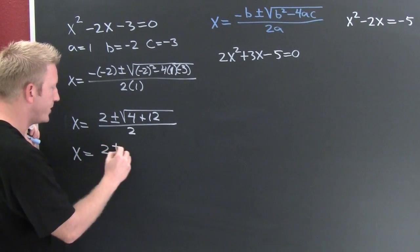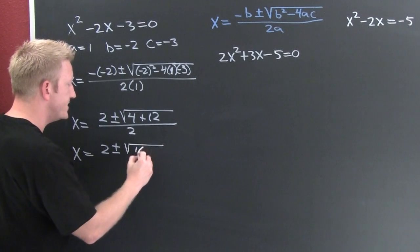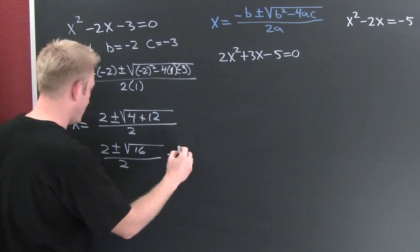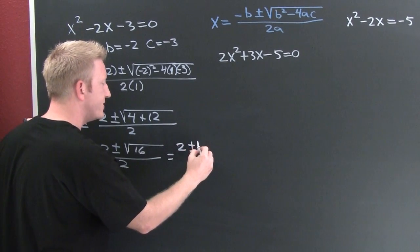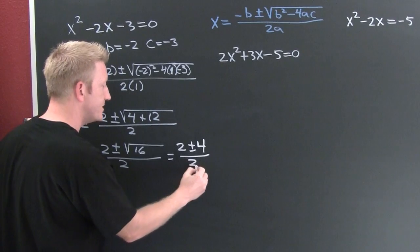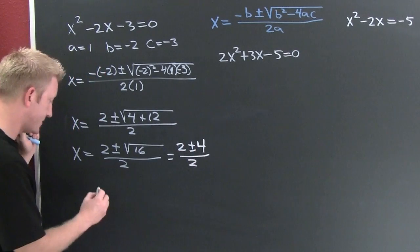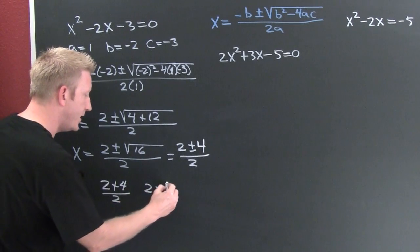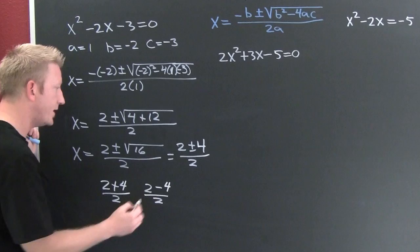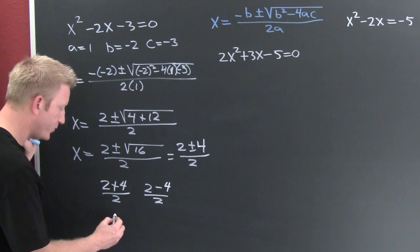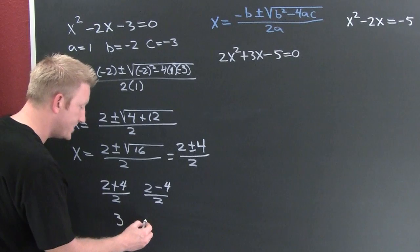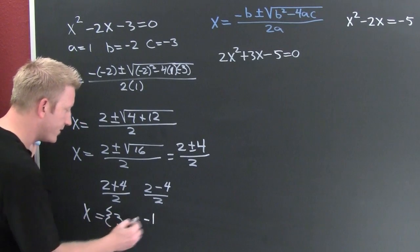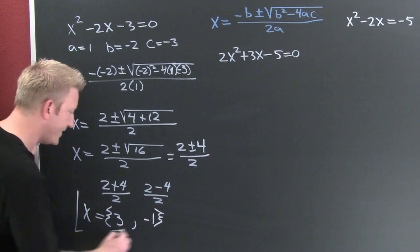Clean it up: x is 2 plus or minus the square root of 16 divided by 2. This is going to look like 2 plus or minus 4 divided by 2. Now we see that is actually two cases: 2 plus 4 over 2 and 2 minus 4 over 2. This is 6 over 2 which is 3, or minus 2 over 2 which is minus 1. These are my zeros.